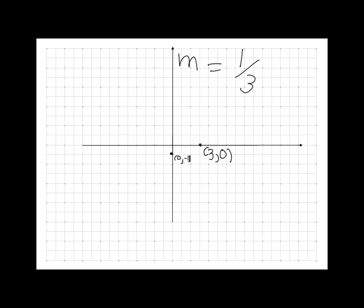So from here, the beauty of the slope-intercept form is we can simply write down the equation: y is equal to 1/3 times x plus -1.